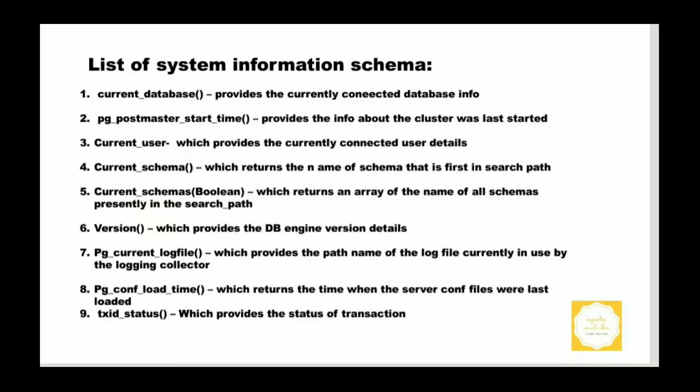Let us see the list of system information functions in detail. The first one is current_database, which provides information about which database you are currently connected to in the PostgreSQL cluster. The second is pg_postmaster_start_time, which provides information about when the cluster was last started. Then current_user provides the current connected user details. Note that these system functions do not have open and close parentheses.